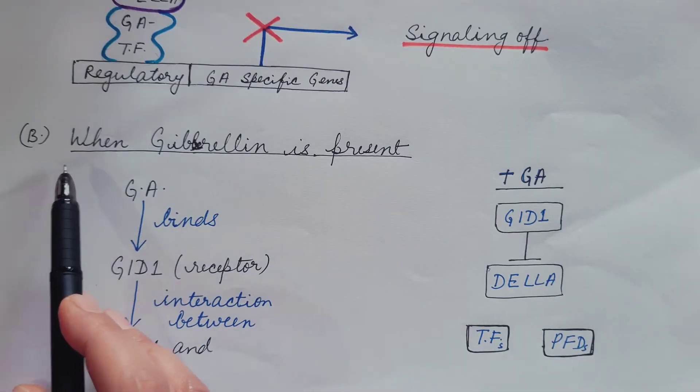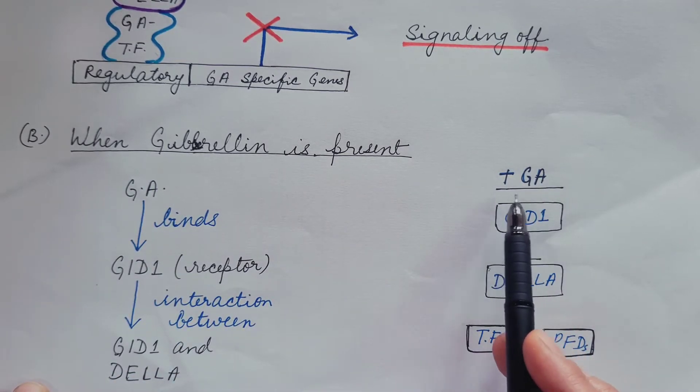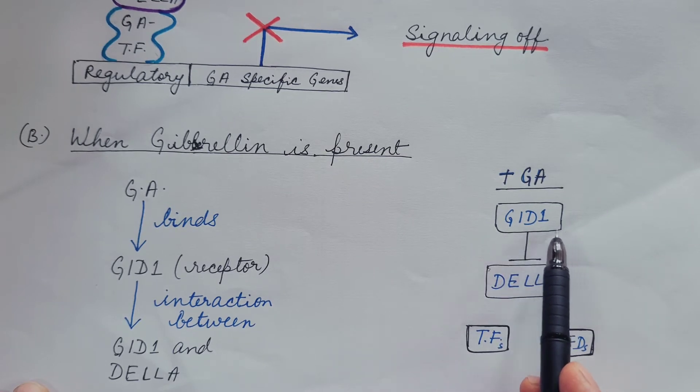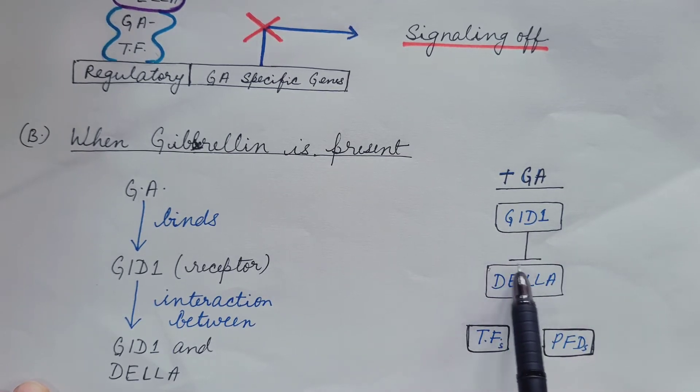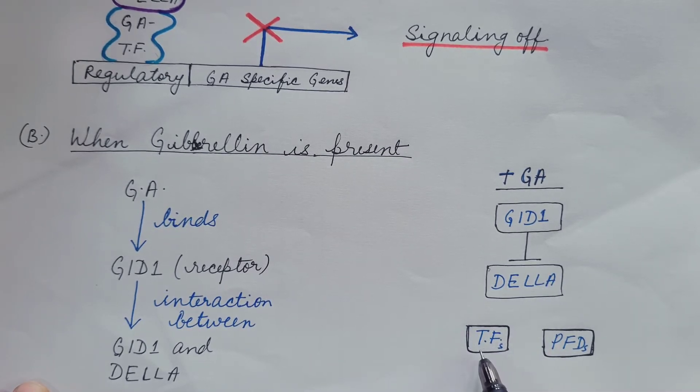Now the second situation when gibberellin is present. When gibberellin is present, it binds with GID1, the receptor, which in turn binds with DELLA protein. So now this DELLA protein does not bind with transcription factor and prefoldins.